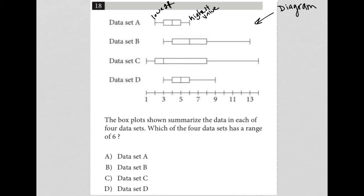The box plots shown summarize the data in each of four data sets. Which of the four data sets has a range of six?